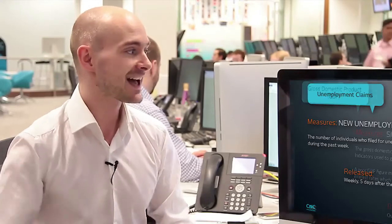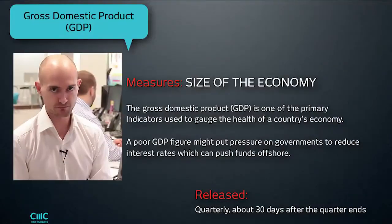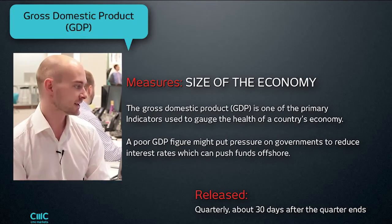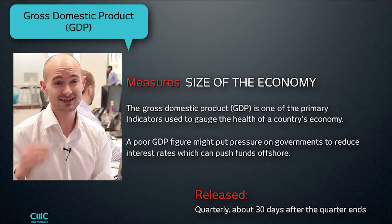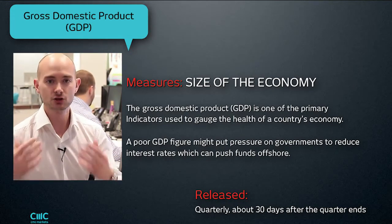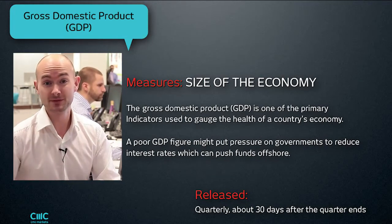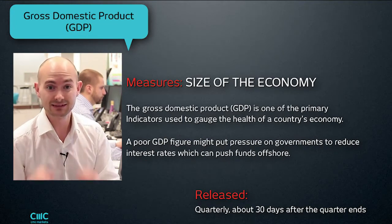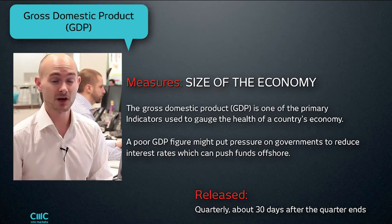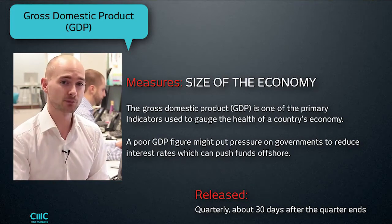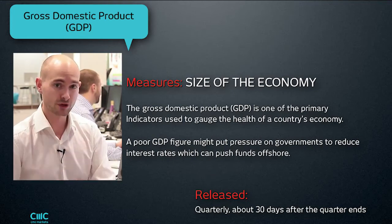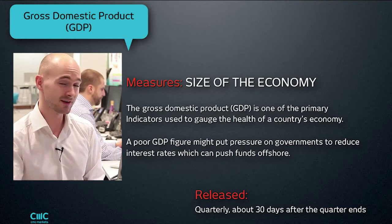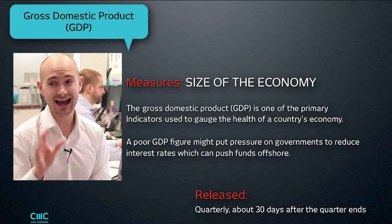The next one to look at is gross domestic product, or GDP. This is particularly important because it actually measures the size of an economy and is one of the primary indicators used to gauge its health. If GDP is increasing, the country's economy is potentially doing better. If GDP levels are coming down, the country is making less money and its competitiveness is affected. If GDP figures are dropping, it puts extra pressure on the government to lower interest rates to try and stimulate the economy. GDP comes out quarterly, 30 days after the end of the quarter.